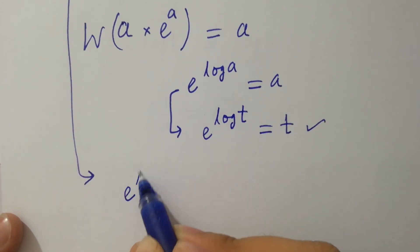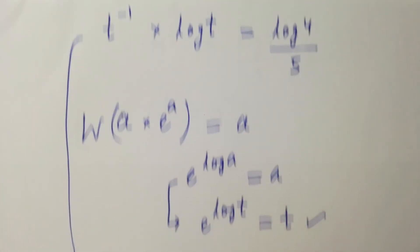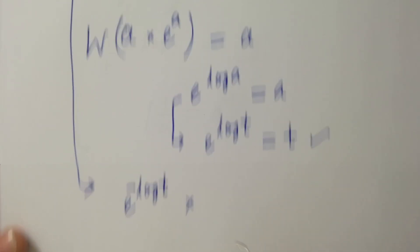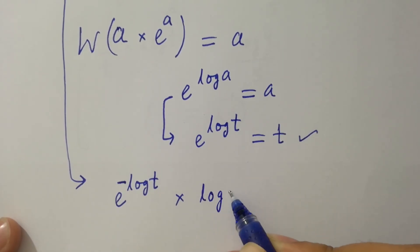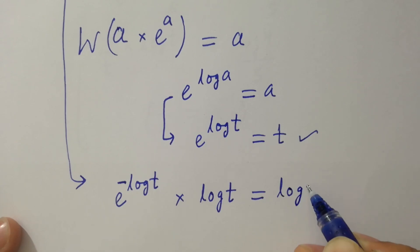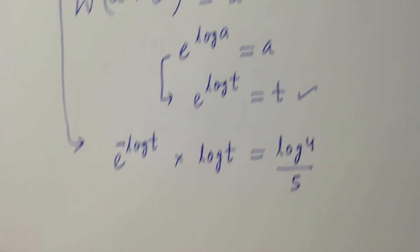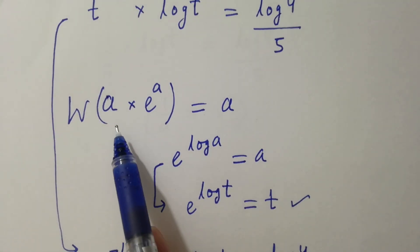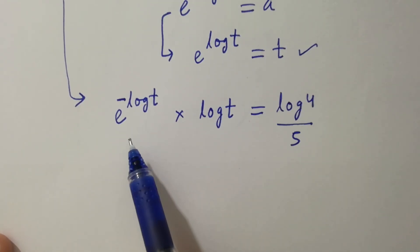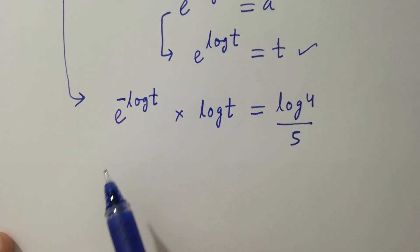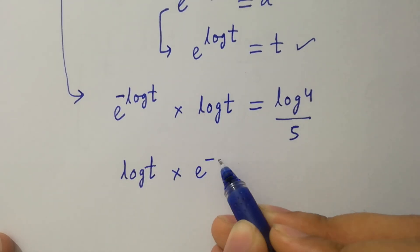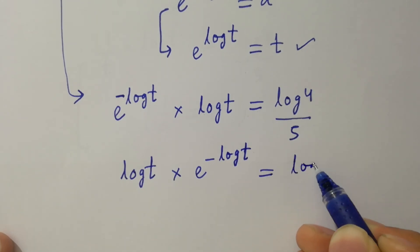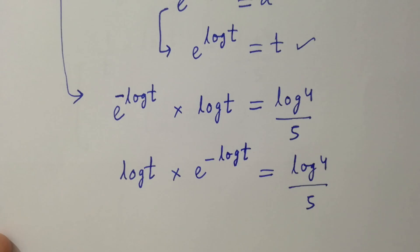Substituting e to the power log t for t with the exponent minus 1, we get minus log t times log t equals log 4 over 5. Rearranging, we have log t times e to the power minus log t equals log 4 over 5.